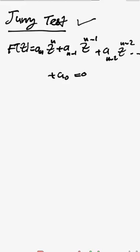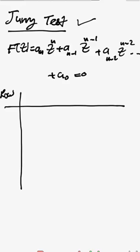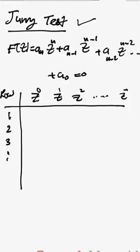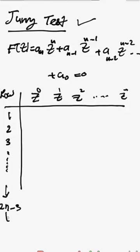We need to make a table with columns for z to the power of 0, z to the power of 1, z to the power of 2, until z to the power of n. The number of rows goes from row 1, row 2, row 3, up to 2n minus 3, where n is the order of the system.